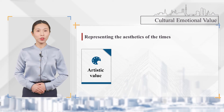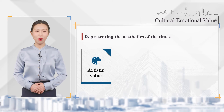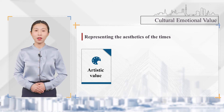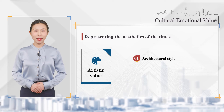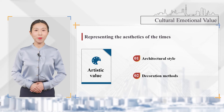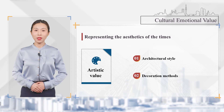Artistic value in cultural emotional value is the status of historic buildings in the history of human art development — they are representative of the aesthetics of their times. The architecture style and decoration methods of historical buildings must embody certain artistic value; the oil tanks modified in Shanghai are a good example.